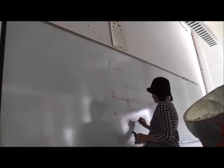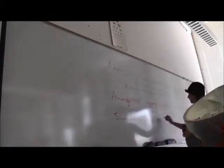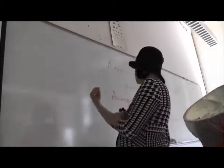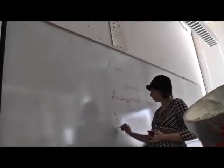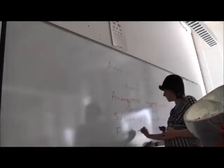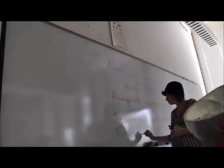We have muscles called synergists. Synergists assist the prime mover in some way — they help the prime mover. Keeping arm flexion as our movement, a synergist would be your brachialis. We also have specific types of synergists called fixators. Fixators stabilize a joint so that you can perform the movement — a fixator is a synergist that specifically holds another joint still.